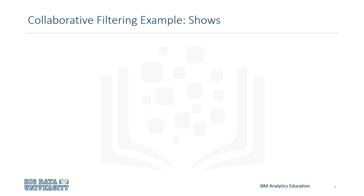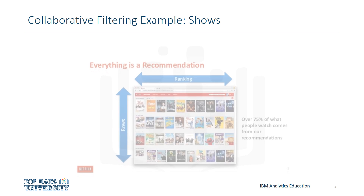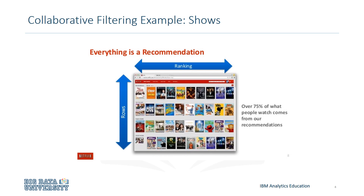One popular example of collaborative filtering is Netflix. Everything on their site is driven by their customer selections, which, if made frequently enough, get turned into recommendations. Netflix orders these recommendations in such a way that the highest ranking items are more visible to users in hopes of getting them to select those recommendations as well.